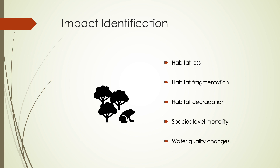Direct and indirect impacts can result in the reduction of species populations, loss or degradation of habitat, habitat fragmentation, disruption of wildlife movement, the spread of invasive species, and reduced generation of and/or human access to ecosystem services. Evaluating the impacts to biodiversity features and ecosystem services should take an ecosystem-level approach by considering the ecological patterns, processes, and functions that are necessary to maintain them.